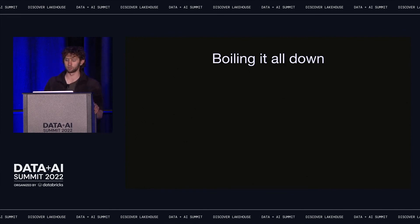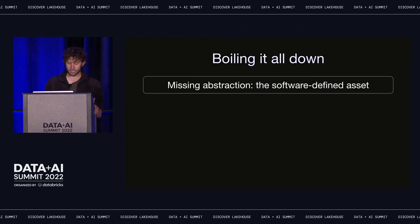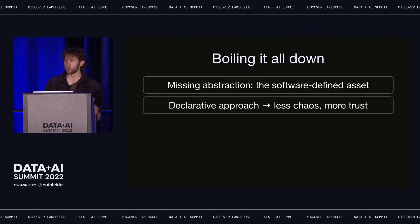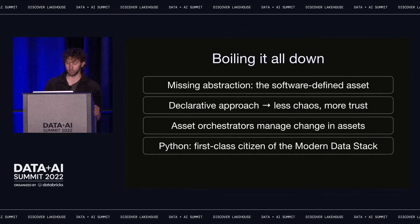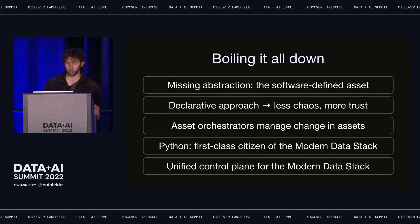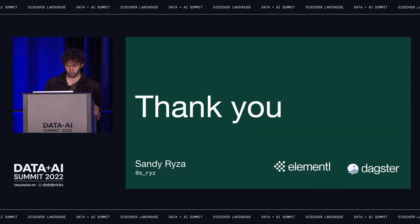Let's boil it down to the main things we talked about. The world of data needs a new spanning abstraction — the software-defined asset — which is a declaration in code of an asset that should exist. Defining assets in software enables a new way of managing data that makes it easier to trust, easier to organize, and easier to change. The seat of the asset definition is the orchestrator: the system you use to manage change should have assets as its primary abstraction and is in the best position to act as their source of truth. Software-defined assets allow Python to become a first-class citizen of the modern data stack, and asset-based orchestration offers a unified control plane across different tools.